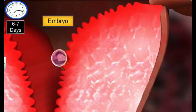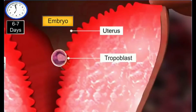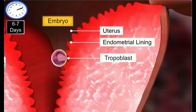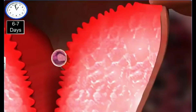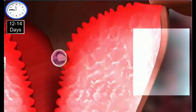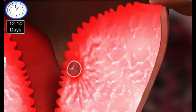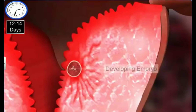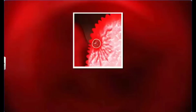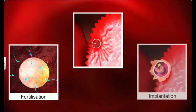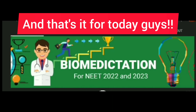At the blastocyst stage, the zygote, now called the embryo, gets attached to the uterus as the trophoblast grows outward and penetrates the endometrial lining. In response, the endometrial cells divide and start surrounding the blastocyst, causing it to sink and get implanted into the uterus. Once implantation has occurred, pregnancy gets initiated. After implantation, inner cell mass cells differentiate and begin to form the embryo.